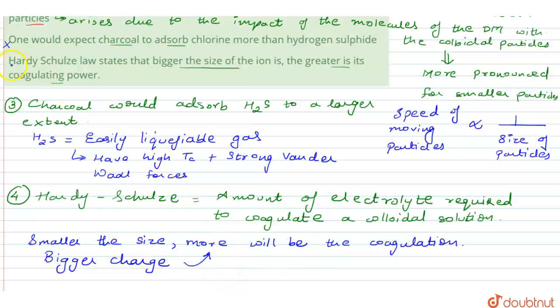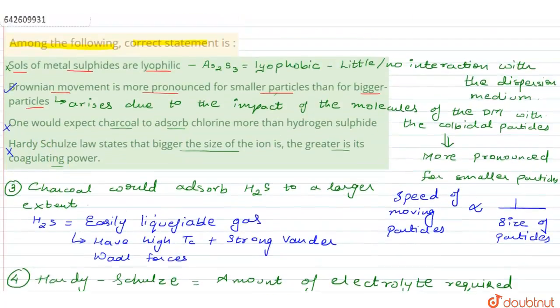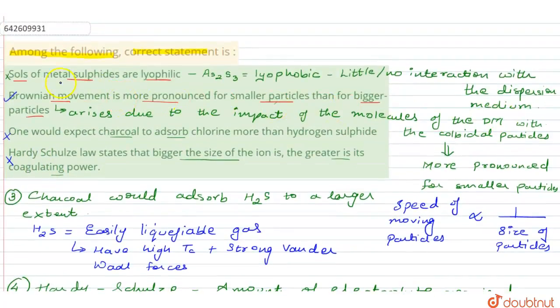So again the fourth statement is also incorrect. We have only one statement which is correct and that is about the Brownian movement which is reflecting in option number two. I hope you understood the explanation. Thank you.